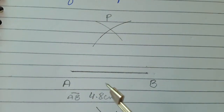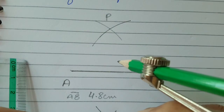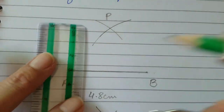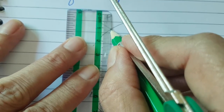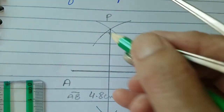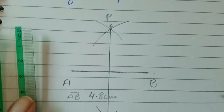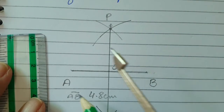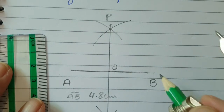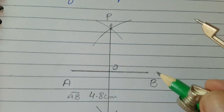P is this point and Q is this point where the two arcs cut each other. Now join these two points. Put your pencil in the notch and extend the line — this is the P end and this is Q. This line is a straight line with an arrowhead. You bisect your line AB at O. This point O bisects the line AB and makes two equal parts: AO and BO.